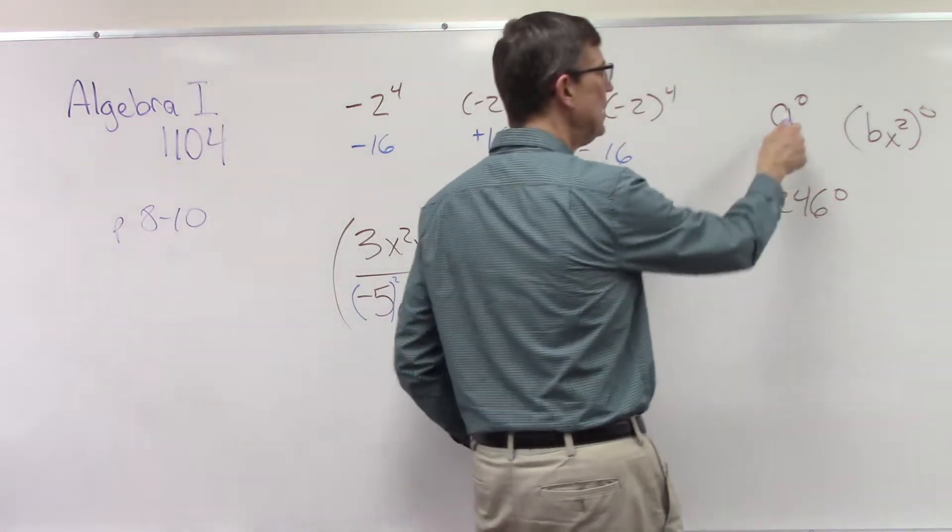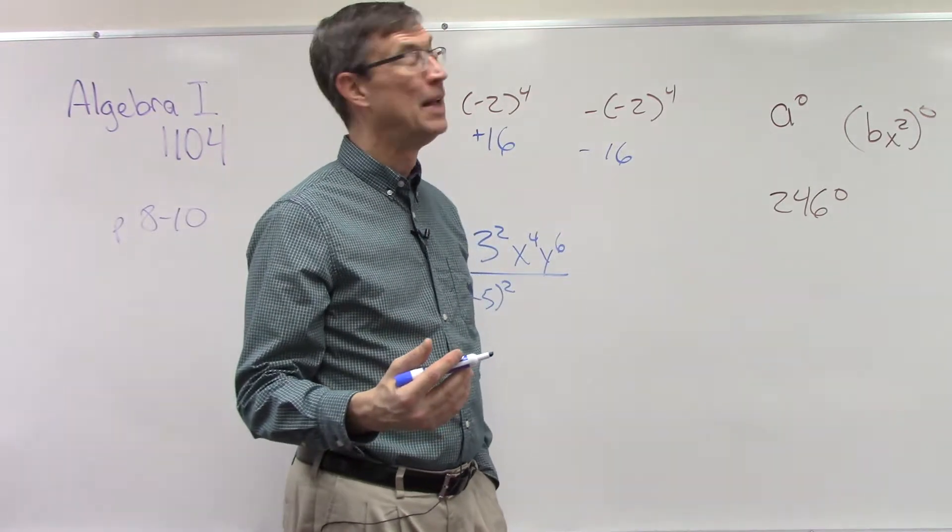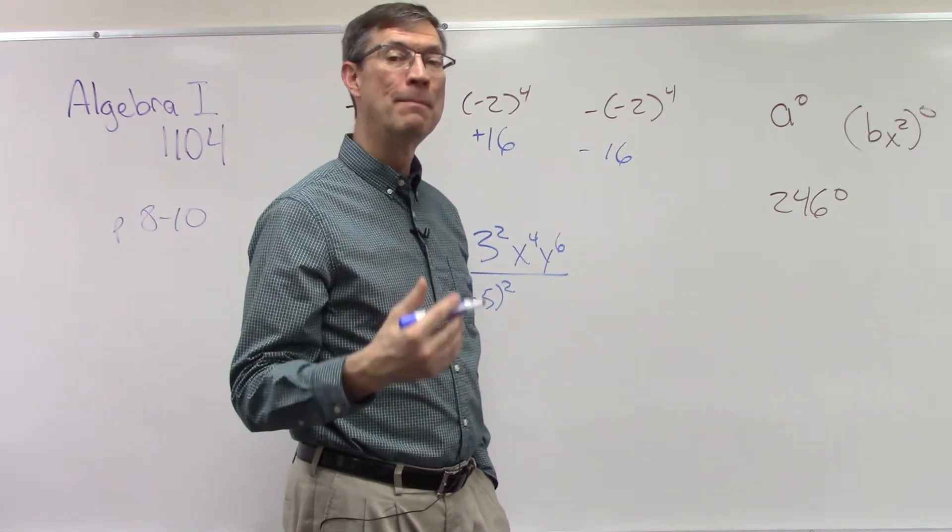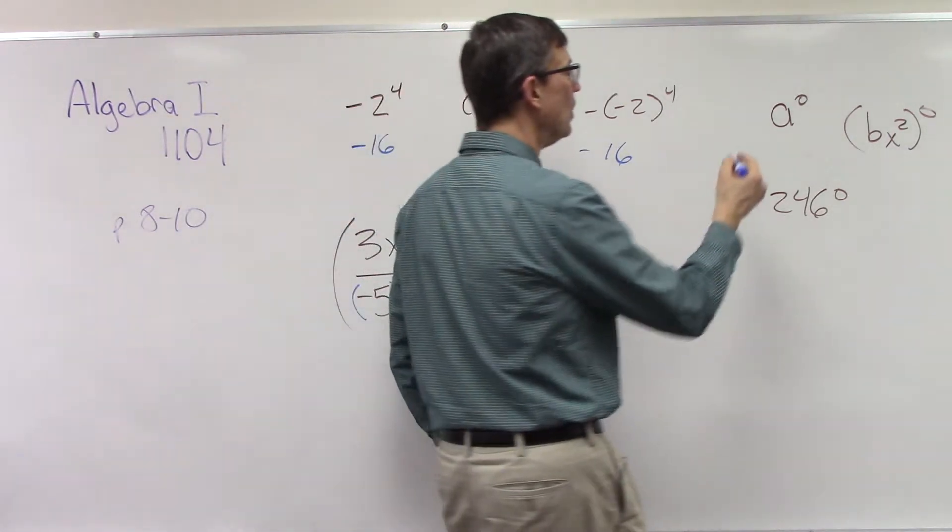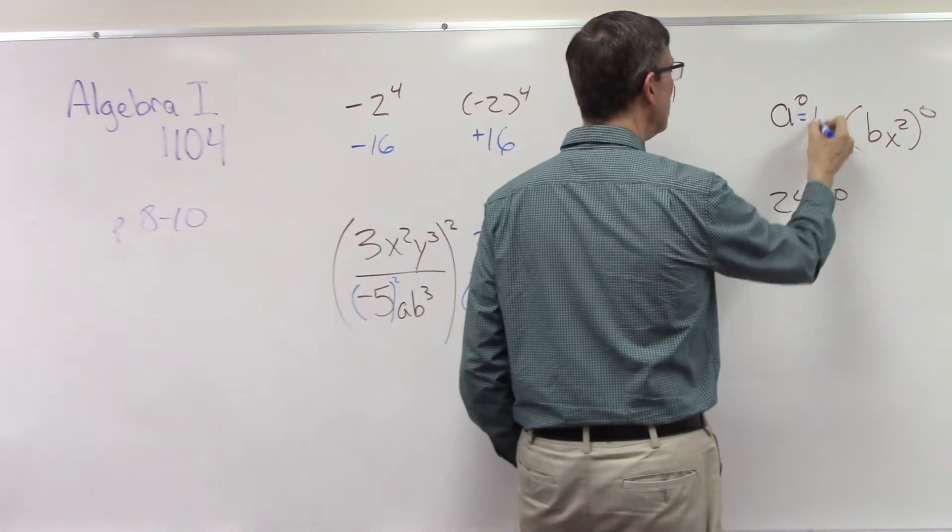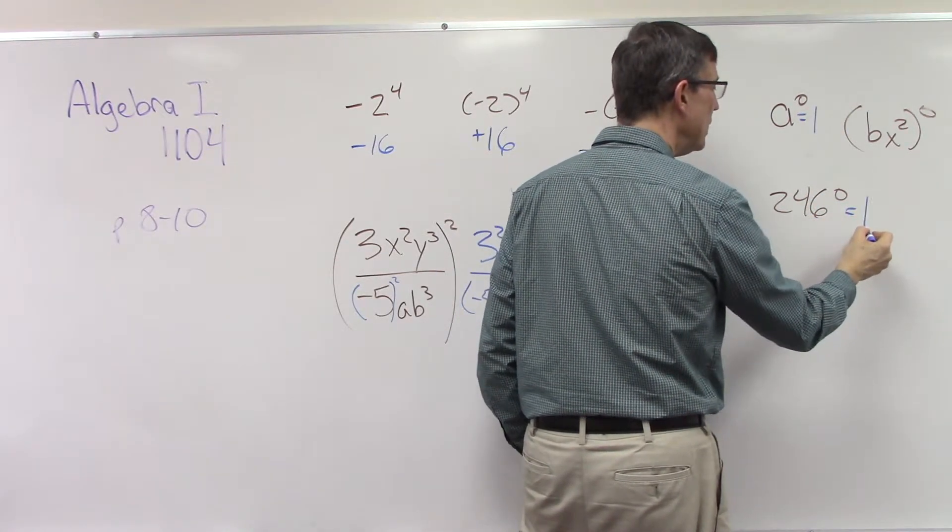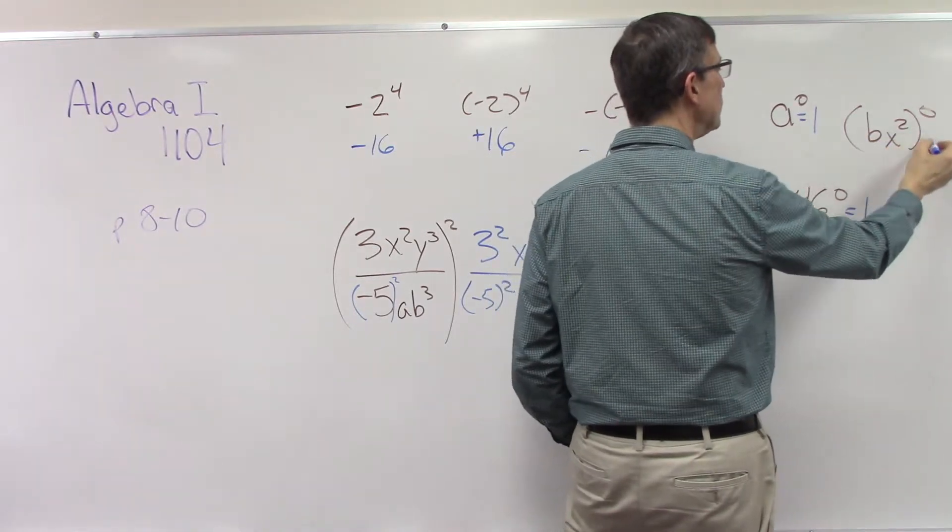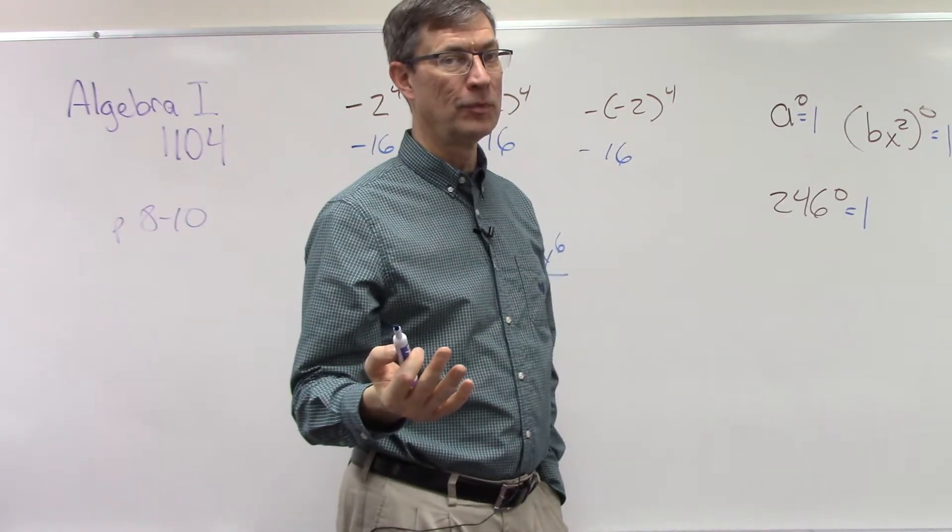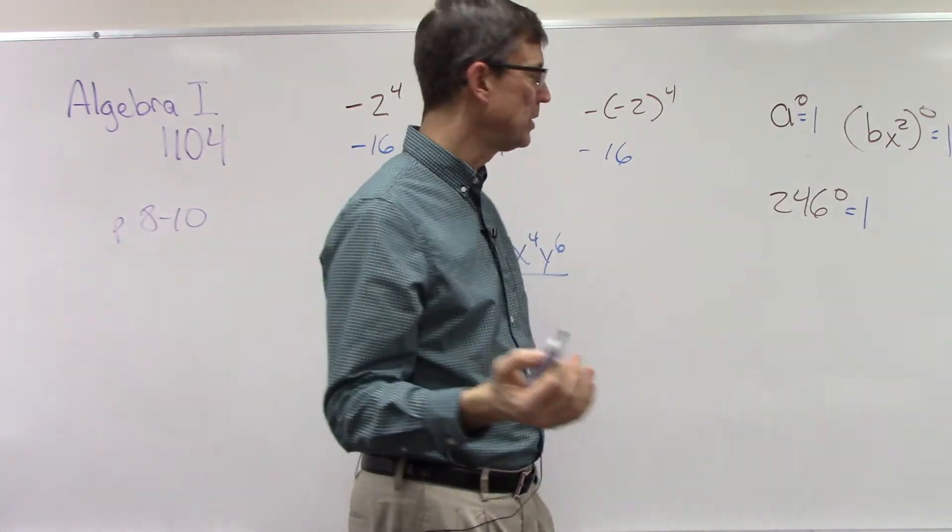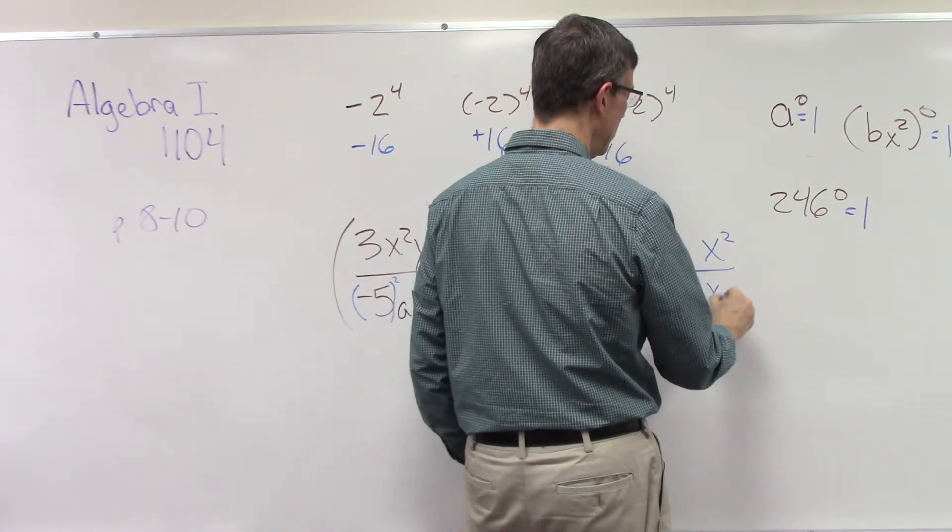Now let's talk about the concept on the next page, which is page 10. It's a real easy lesson. And that is that anything to the 0 power is not 0. It is the number 1. So A to the 0 power is 1. 246 to the 0 power is the number 1. And Bx squared to the 0 power is the number 1. Now, if you want to know why, I'll give you a real quick lesson on why it's true.